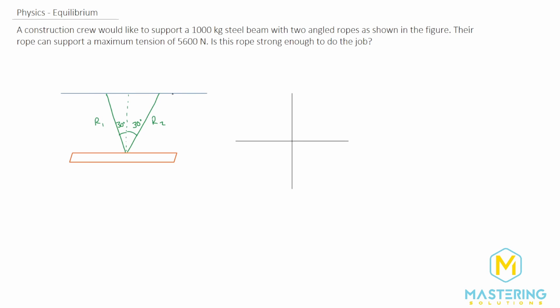Welcome to Mastering Solutions. This equilibrium problem tells us that a construction crew wants to support a 1000 kilogram steel beam with two angled ropes as we have in this picture here, and they say that the rope can support a maximum tension of 5,600 newtons. We need to figure out if the rope's strong enough to do that.